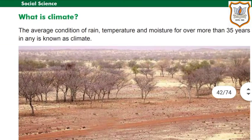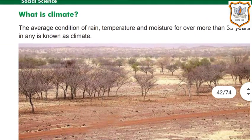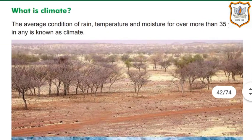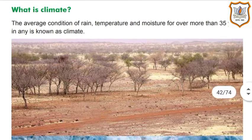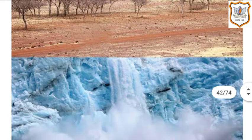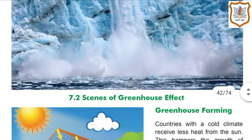Our next topic is climate. What is climate? The average condition of rain, temperature, and moisture for over more than 35 years in any region is known as climate. You can see the picture given in your textbook.